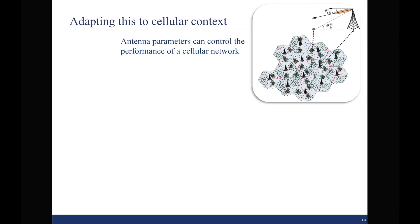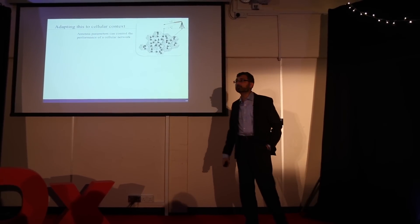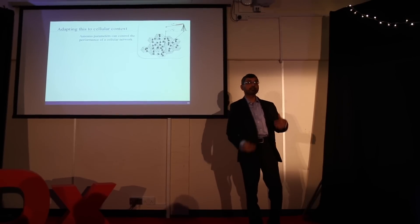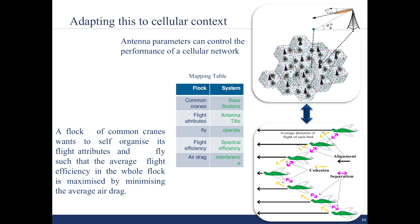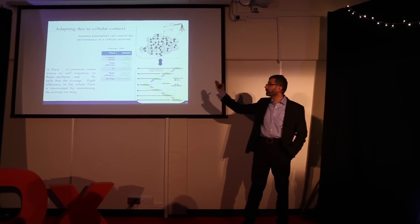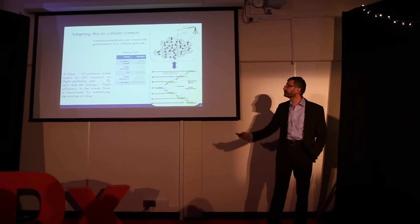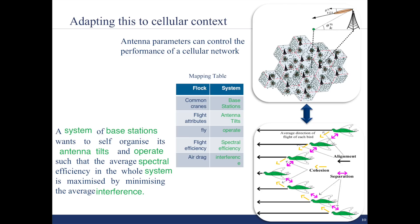Can we learn from this system and adopt it in our cellular system? Cellular system is a bunch of base stations which are trying to optimize those parameters. So you can say that these base stations have an objective. They have to minimize the interference in the network, just like those cranes have to minimize the drag that they face so that their flight efficiency is improved and they can travel long distances. So we can create an analogy: common cranes are just like base stations in our network. Flight attributes are the antenna parameters in those base stations because they control the interference in the system. The operation of flying is just like the operation of operating a network. Flight efficiency is spectral efficiency and air drag is the interference that we are trying to combat.